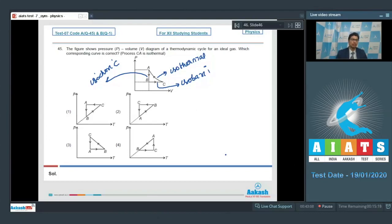Dear students, we have to check that in which of the following graphs the PT graph is correctly represented. Dear students, from A to C, the temperature should remain constant. We can see all the graphs and see that option number 1 cannot be the answer because from A to C the temperature is varying, while in other options A to C temperature is constant.